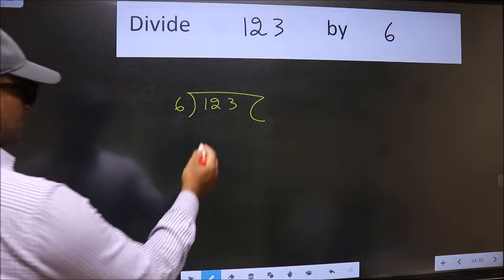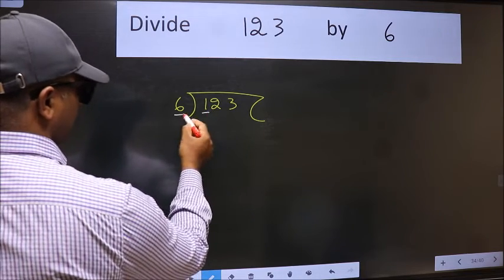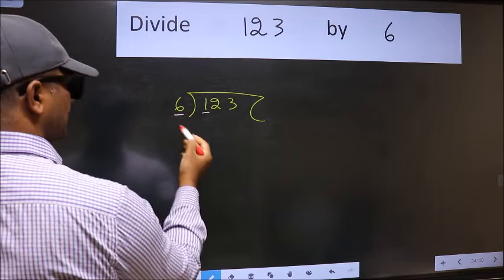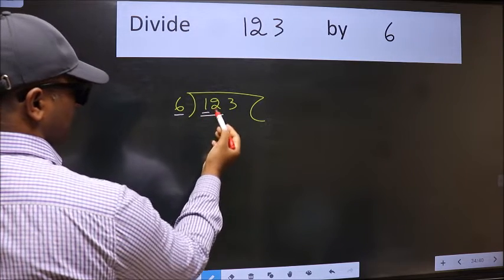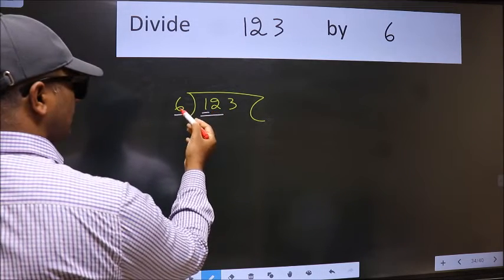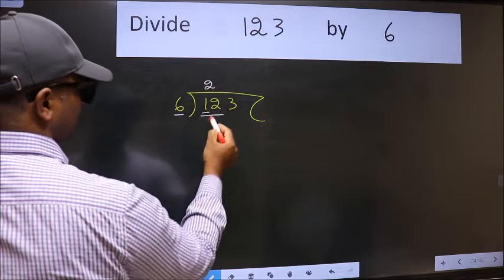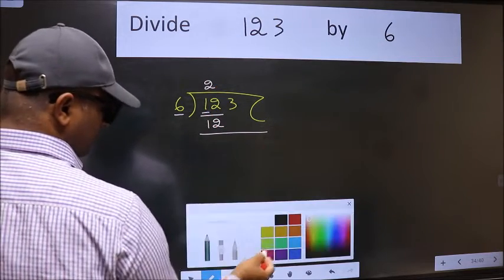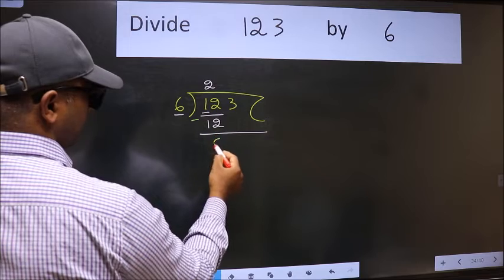Next, here we have 1 and here 6. 1 is smaller than 6, so take 2 numbers, 12. When do we get 12 in the 6 table? 6 times 2 is 12. Now we should subtract. We get 0.